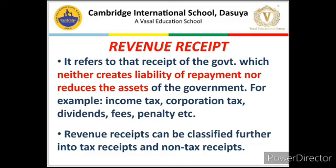For example, tax. If the government is earning tax, does the government ever pay back the tax? Like Mr. X paid income tax of 10 lakh in 2015 — does the government give it back to Mr. X in 2020? No, it does not. So all types of tax income earned by the government carry no liability to repay. That is why taxes are always revenue receipts — the money earned as tax is neither repaid nor does earning it reduce the government's assets.